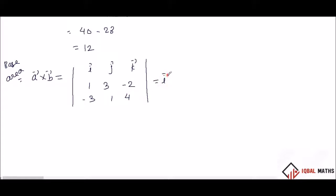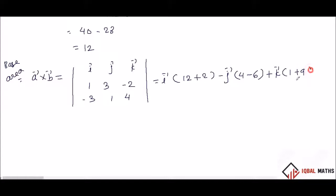So, this is i-vector: 3 into 4 = 12, minus 1 into minus 2 = plus 2. Minus j-vector: 1 into 4 = 4, minus 3 into minus 2 = plus 6. Plus k-vector: 1 into 1 = 1, plus 9. So we get 14 i-vector, minus 2 j-vector, plus 10 k-vector.